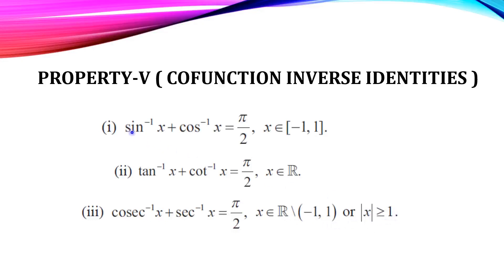So, for each co-function inverse pair, the sum of the two inverse functions is always π/2. That is Property 5.